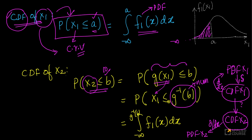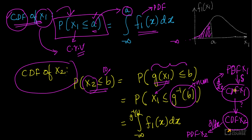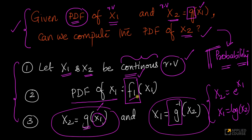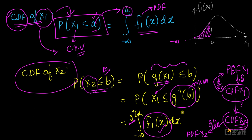Here comes the fun. We can compute the probability that x1 is less than or equal to something using the CDF. So, applying this formula, it is the integration from minus infinity to g inverse of b of f1(x) dx. So what do we have now? I have obtained the CDF of x2. From PDF of x1, I got CDF of x1 using simple integration. From CDF of x1, I can get CDF of x2 because I already know f1(x) and the g inverse function.